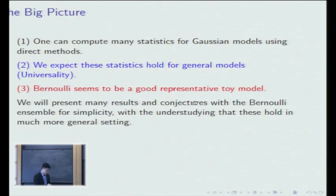So the big picture that I think of is the following. For the Gaussian models, one can compute many statistics, either global or local, using direct computations, which by no means are easy, but those are known for a long time. And we expect these statistics to hold for more general models, which I put all theorems or conjectures of this type under the title of universality, which is not only specific to any parameters, but it's just a general phenomenon. Now, when we want to go from the Gaussian model to the general model, my experience is that the Bernoulli seems a very good toy representative, the toy model. So if you can do this, it's very likely you can do it for almost any interesting models, which is just experience.